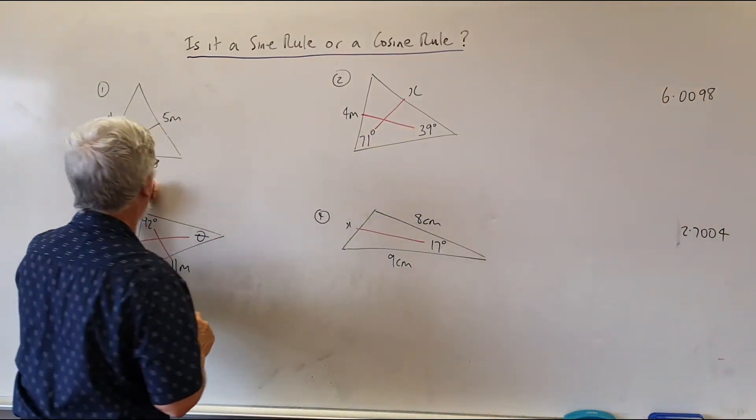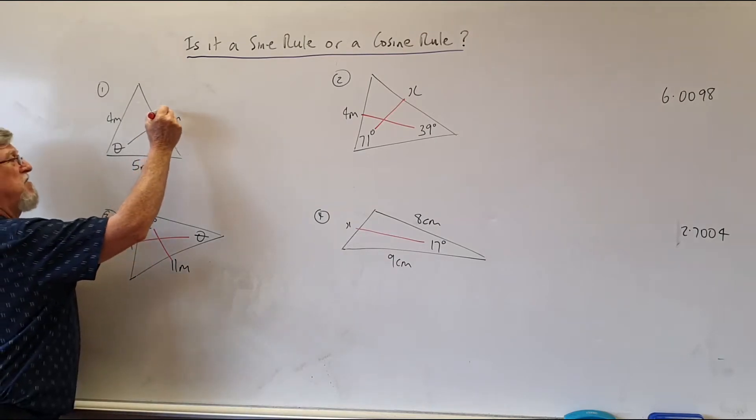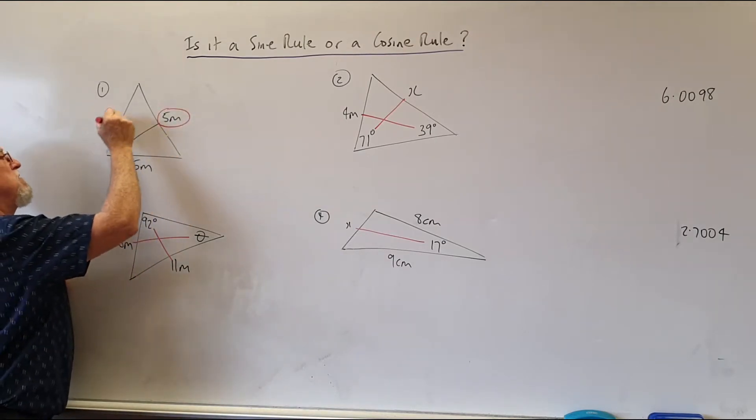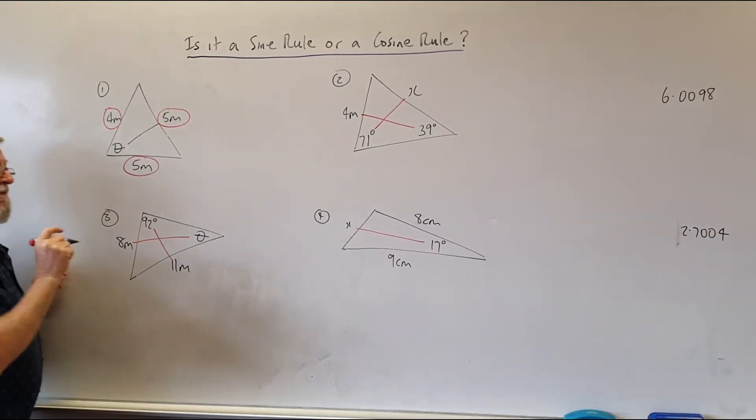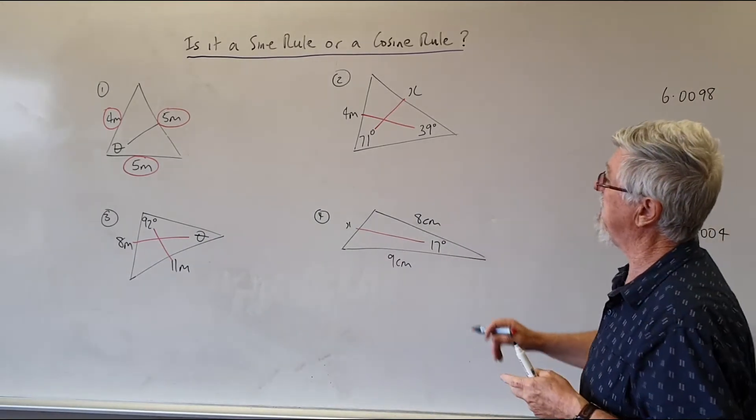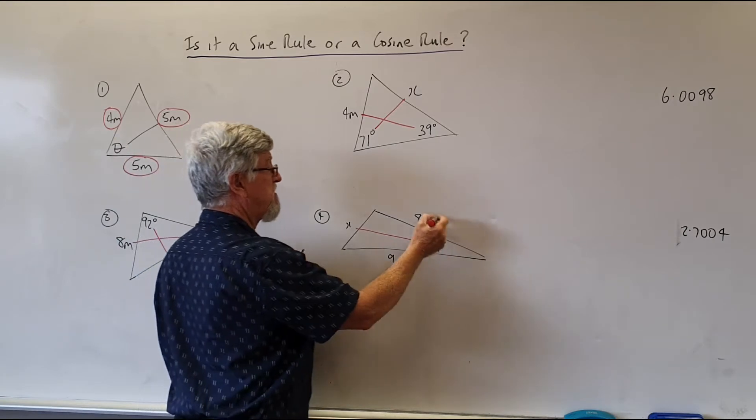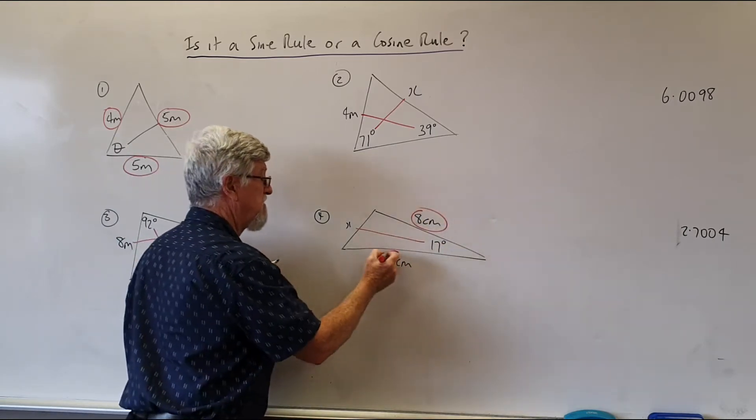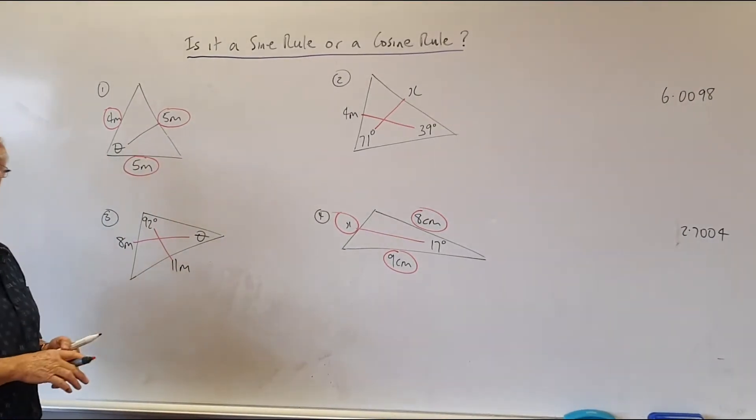Now on this one back over here though, here's the really obvious thing to me, especially over the years teaching it. Something is written on that side. Something's written on that side. Something is written on that side. That's a cosine rule question normally. There's a couple of funny cases, which we'll look at later, but that's going to be a cosine rule. Look at this one over here. Something is written on that side. Something is written on that side. Something is written on that side. That's a cosine rule question.